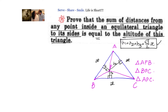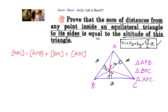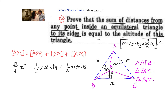Our logic is to equate the area of the triangle, which we already know as root 3 by 4 into x squared, to the sum of these three triangles. So area of ABC equals area of APB plus area of BPC plus area of APC. That gives us: root 3 by 4 into x squared equals half into x into h1, plus half into x into h2, plus half into x into h3.